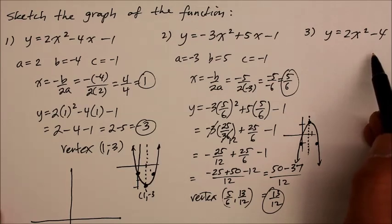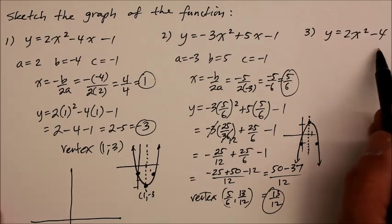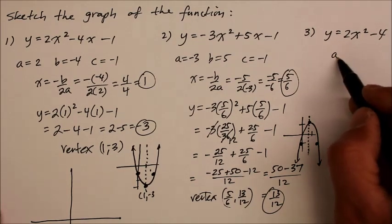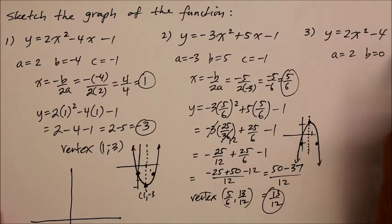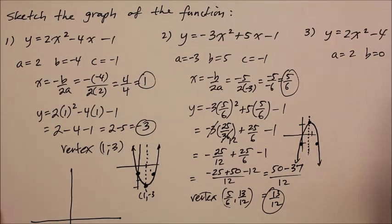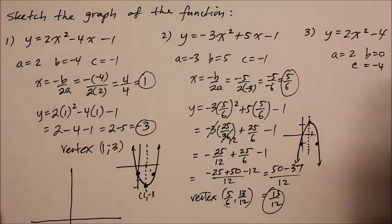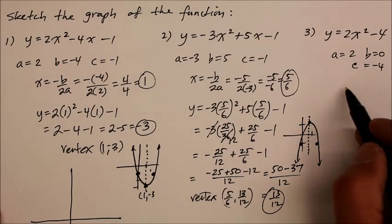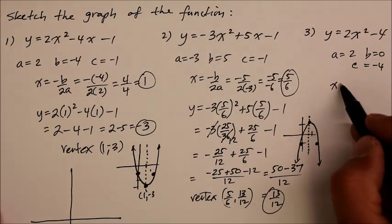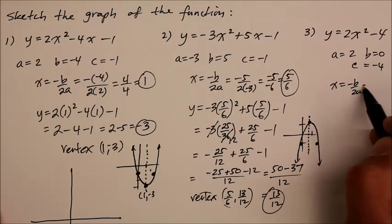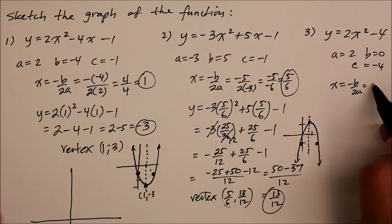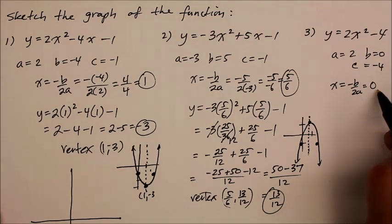And this one? Something's missing, you say. The b. So a is 2, b is 0, c is negative 4. Find the vertex by axis of symmetry, negative b over 2a, which is going to be simply 0 because b is 0.